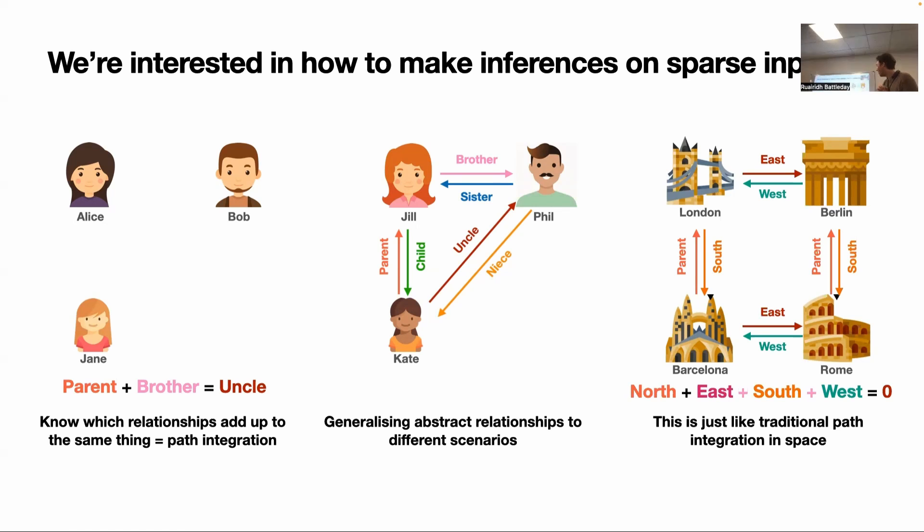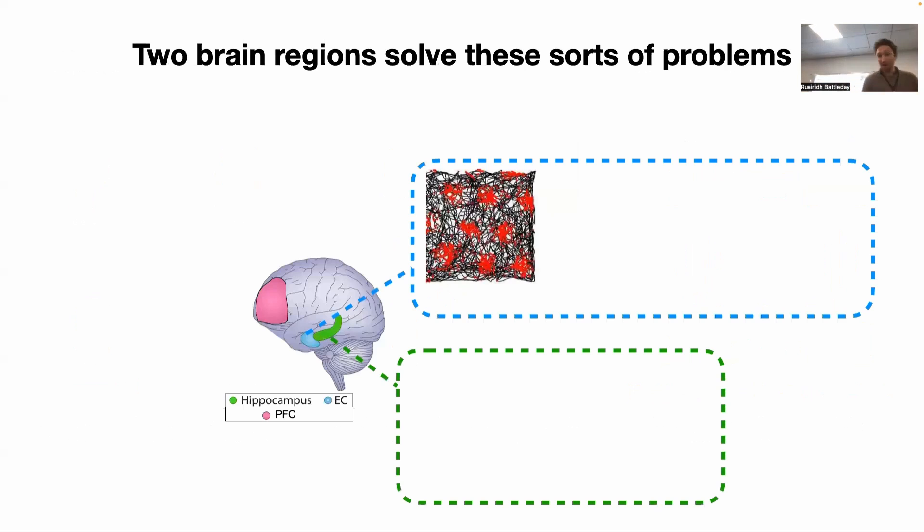The question we're trying to tackle here is what are the algorithms to solve these sorts of problems, and how does the brain do it? Well, we happen to know, or we have some insights at least, in how the brain does it. The brain solves it using these two areas called the hippocampus and the areas of the brain called the prefrontal cortex. Neuroscientists have done lots and lots of recordings of neurons in these areas.